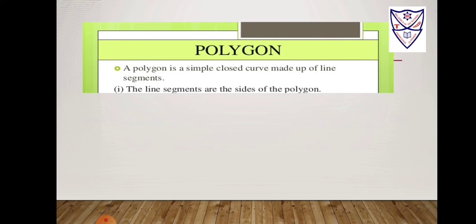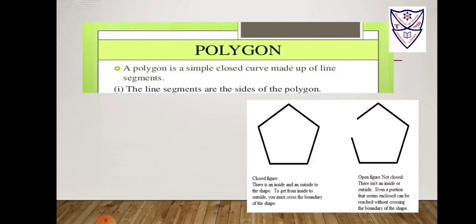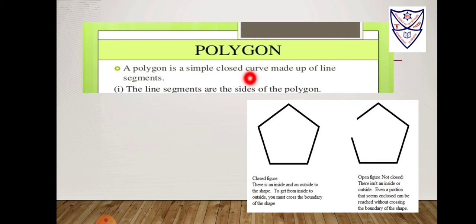Polygon. What is a polygon, students? A polygon is a simple closed curve made up of line segments. The line segments are the sides of the polygon. Let us understand this definition with one example. Students, this is a figure. A polygon is a simple closed curve, meaning it does not cross itself. So this is a simple closed curve, and this is an example of a polygon with line segments.